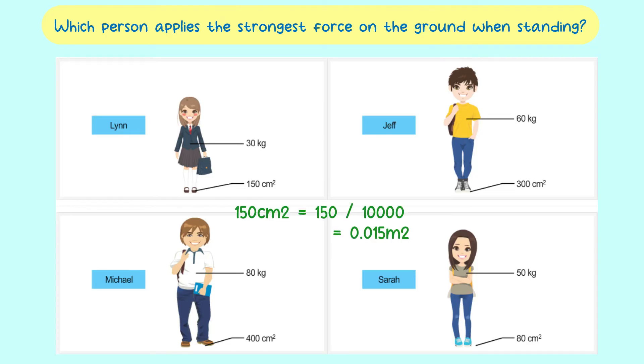For example, 150 centimeters square, if you want to convert them into meter square, you have to divide it with 10,000. So, 150 centimeters square is equivalent to 0.015 meters square. Have you calculated? That's correct.